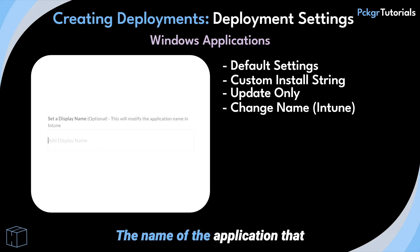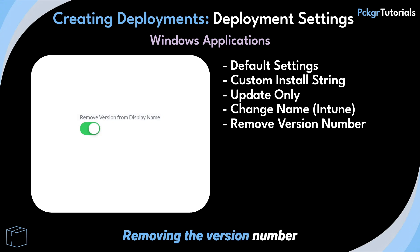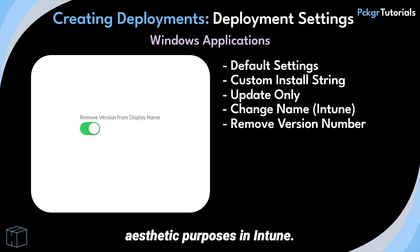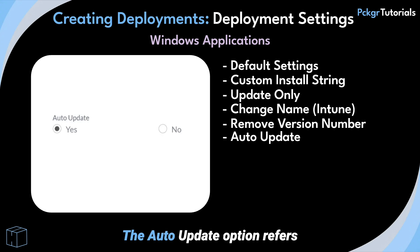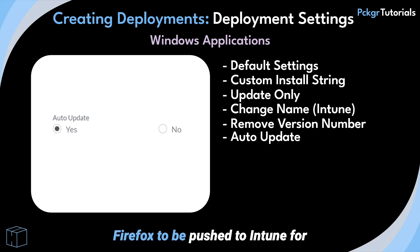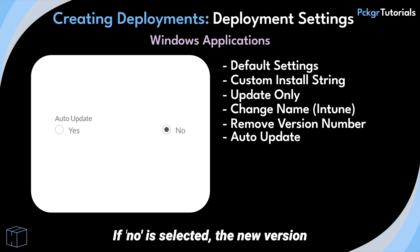The name of the application that shows in Intune can be changed here, which allows for tagging, naming conventions, and personalization. Removing the version number will simply remove this detail from the application name for aesthetic purposes in Intune. This setting does not change the functionality of Firefox.